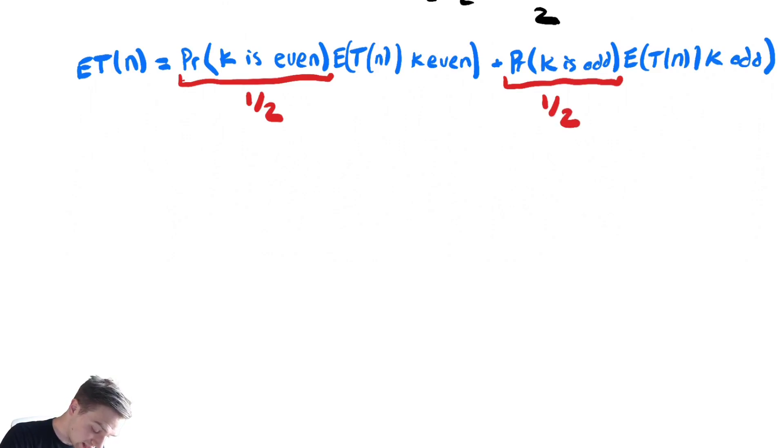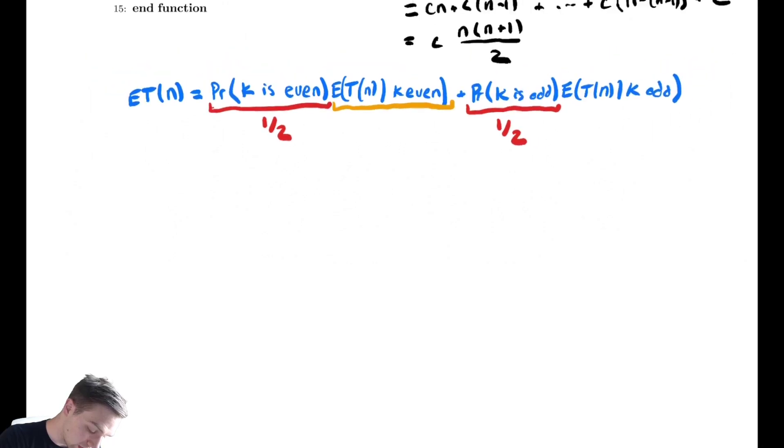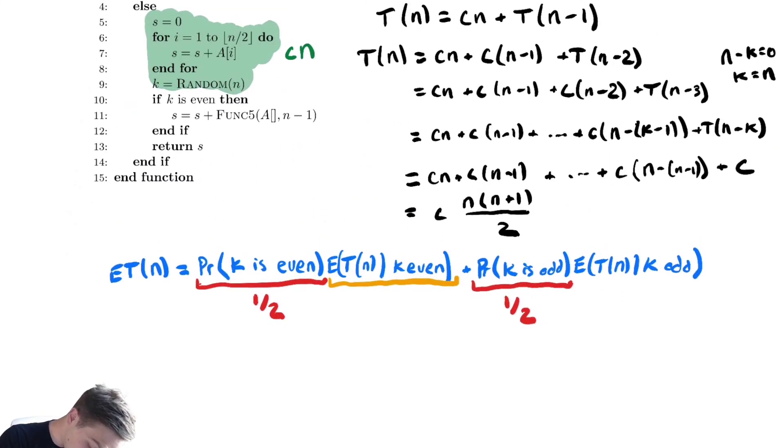And what is the expected time given that k is even? Well let's look at the code. No matter what we are going to do that cn, plus if k is even,